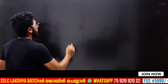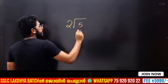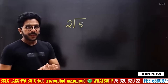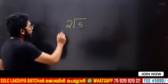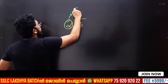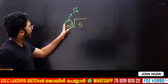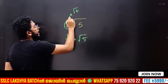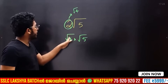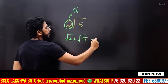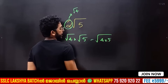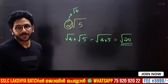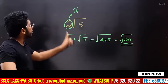We have some simplifications. 2 root 5 — now we have to simplify this. What do we do with 2? 2 is root 4. So root 4 into root 5 — multiply them using the rule. The answer is root 4 into 5 = root 20. So 2 root 5 is the same as root 20.